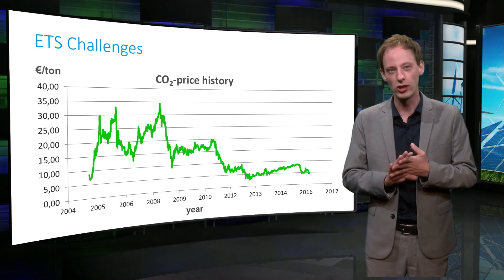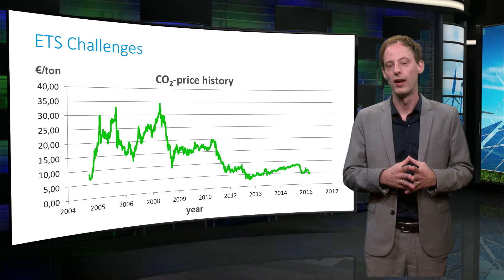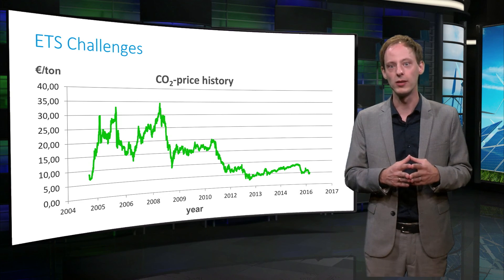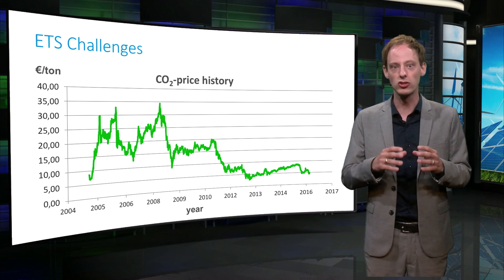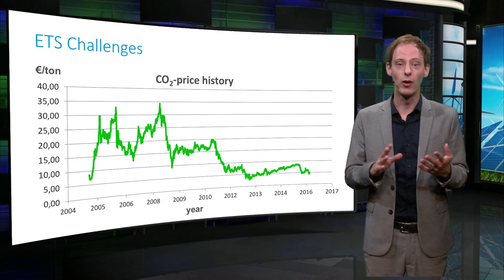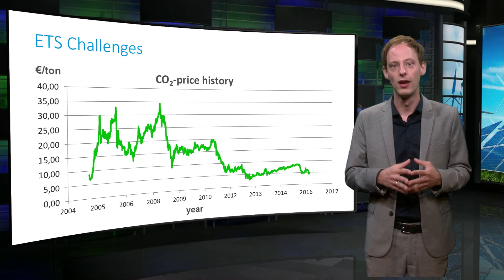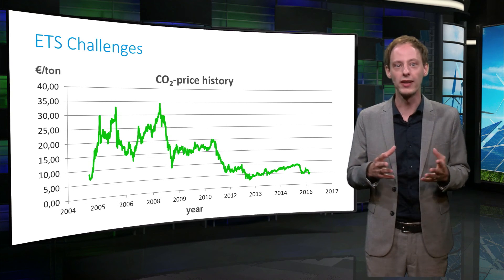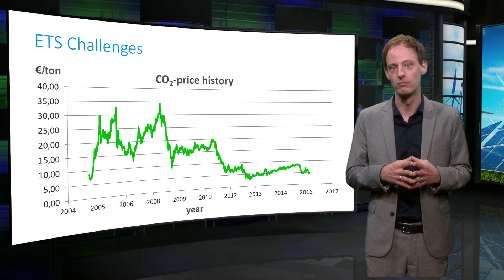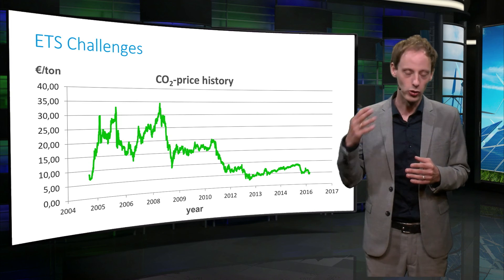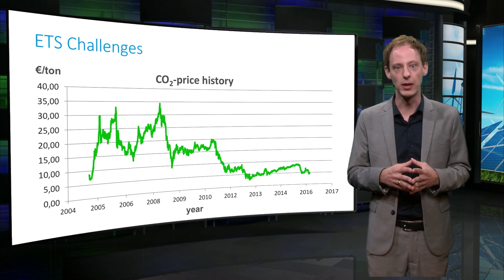In theory, an emissions trading scheme efficiently reduces CO2 emissions to the desired cap, because companies can trade emission credits and various energy-intensive industries are in the system, meaning reductions can be achieved where it is cheapest. However, in reality, the economic crisis led to a surplus of permits in Europe. As a consequence, we see a strong decline in the CO2 price, and low prices have persisted since. Together with high gas prices in Europe, coal — the dirtiest technology — remains economically attractive.